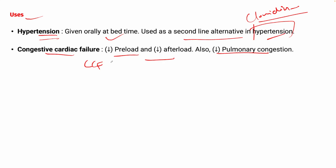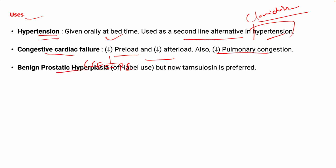In CCF, blood vessels store blood that is not pumped back, increasing pressure in the vessels, and fluid is transferred into the alveoli of the lungs, leading to pulmonary edema or pulmonary congestion. Since prazosin decreases preload and afterload, pulmonary congestion is reduced. It is also used in benign prostatic hyperplasia, though tamsulosin is now more preferred.